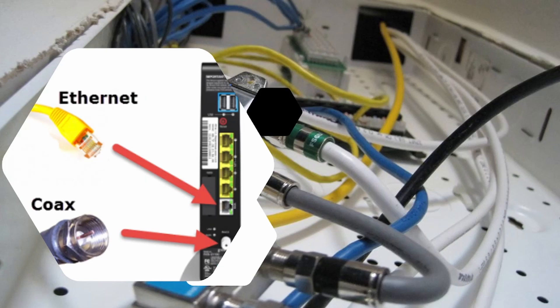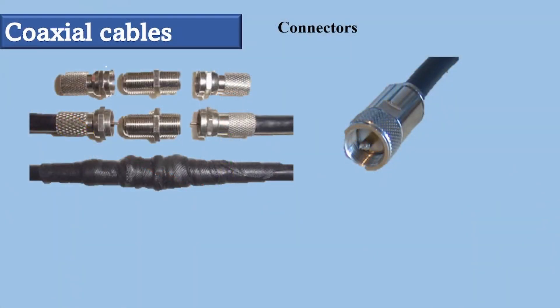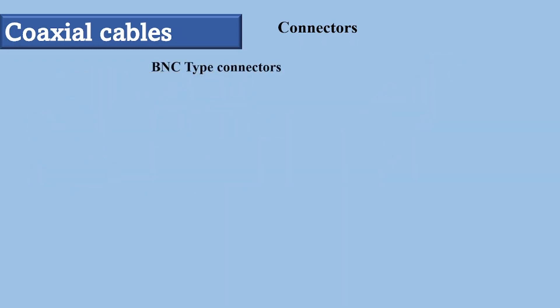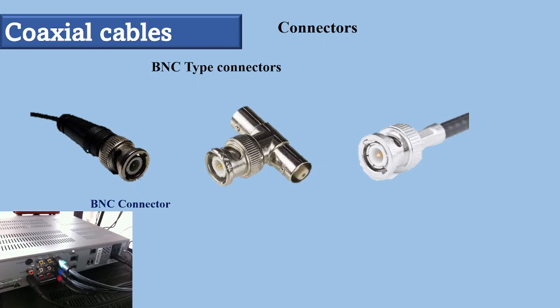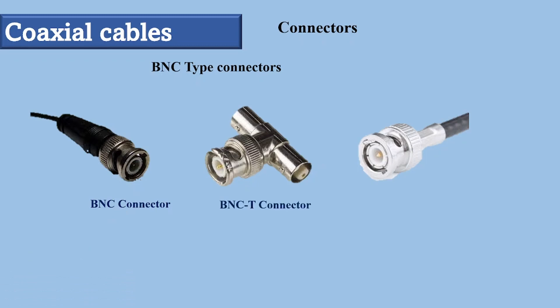To connect coaxial cable with devices, we need a coaxial connector. The most common type of connector used today is the BNC, or Bayonet Neill-Concelman, connector. This connector comes in three forms: the BNC connector, the BNC T connector, and the BNC Terminator. The BNC connector is used to connect the end of the cable to a device such as a TV set. The BNC T connector is used in ethernet networks to branch out a connection to a computer or other device. The BNC Terminator is used at the end of the cable to prevent the reflection of the signal.